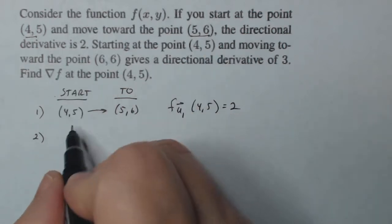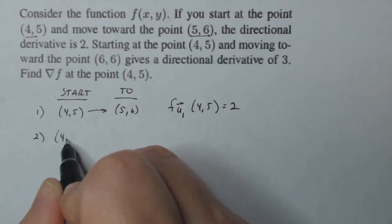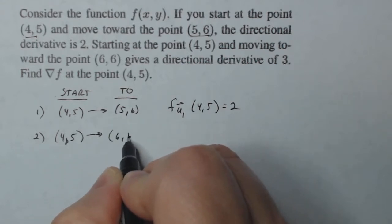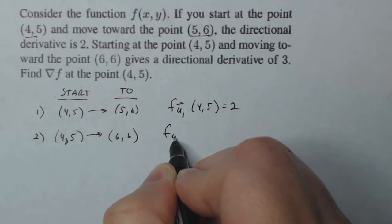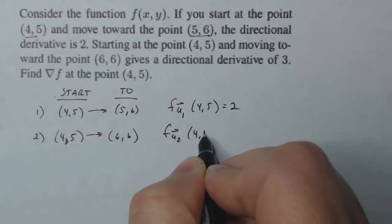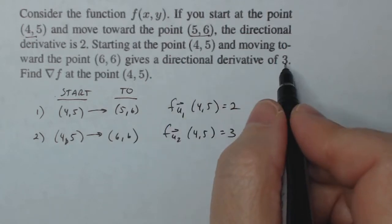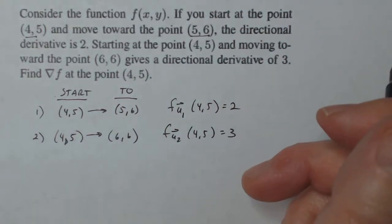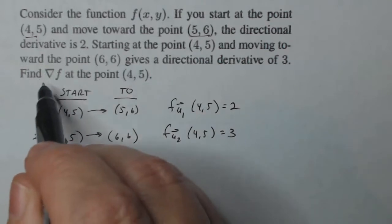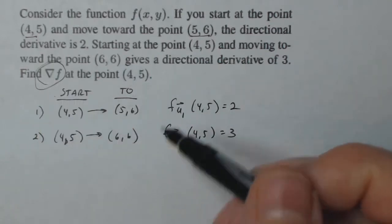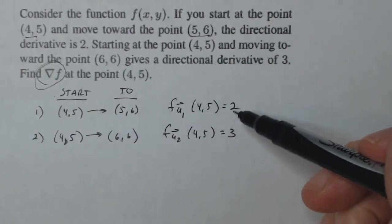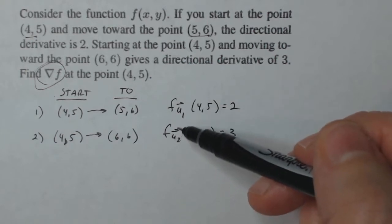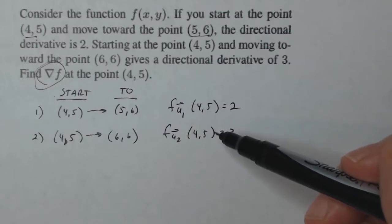The second thing I'm given is that I'm starting at (4, 5) and I go to (6, 6), and the directional derivative at (4, 5) in this case is three. I've taken the information I have and organized it. My goal is to find the gradient of f, and I know the gradient of f is contained in each one of these. Since I'm starting at the same point using the same function, the gradient will be the same in both cases.